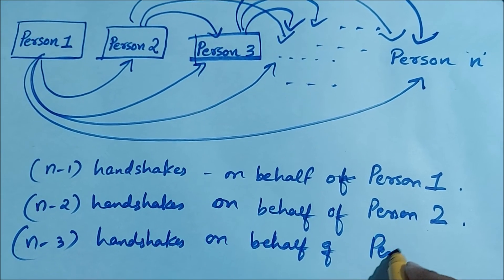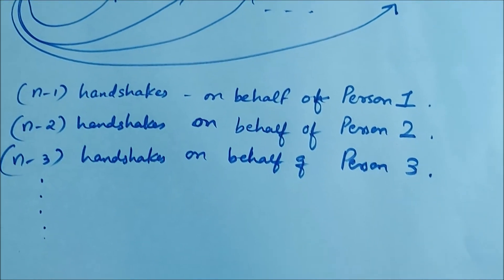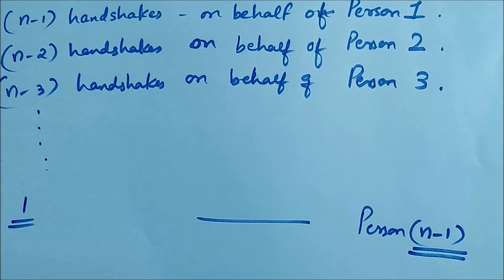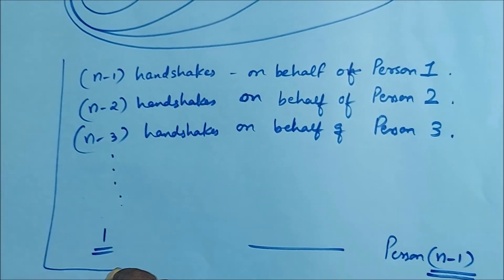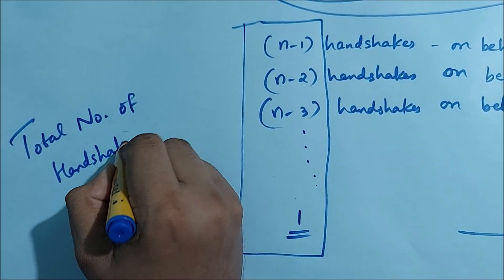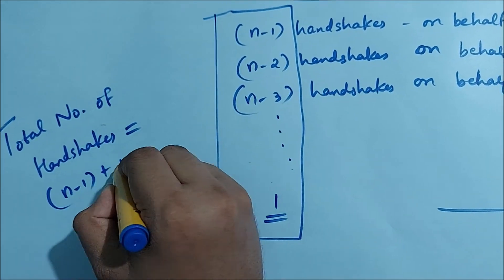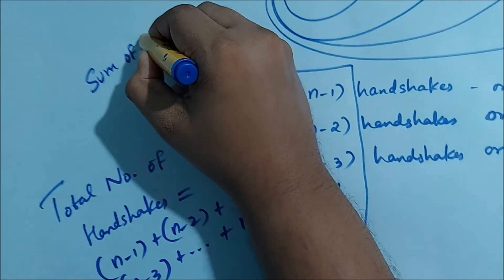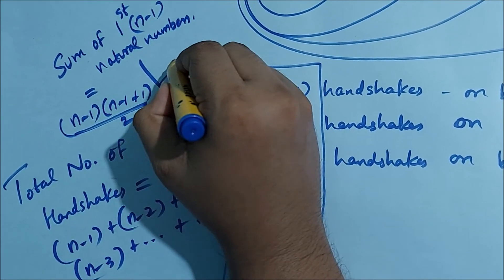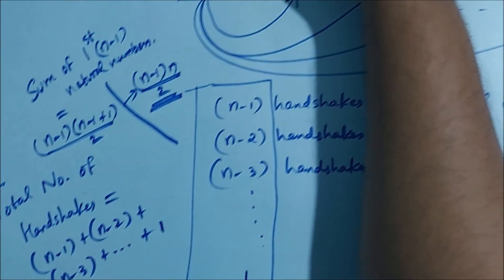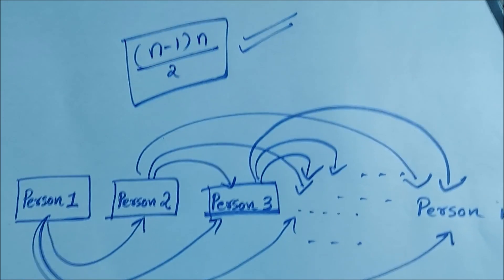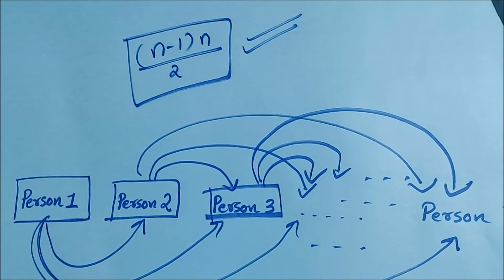Similarly, on behalf of person 4 we have n-4 handshakes, and so on. Adding the total number of handshakes this way without counting any handshake twice, we get the total as (n-1) + (n-2) + (n-3) + ... + 1, which is the sum of the first n-1 natural numbers. This equals (n-1) times n divided by 2, which is n times n-1 divided by 2 — the total number of handshakes between n persons where every person shakes hands with every other exactly once.